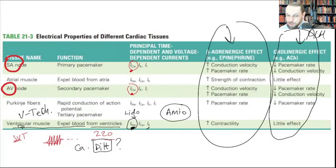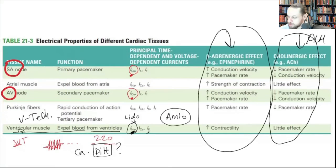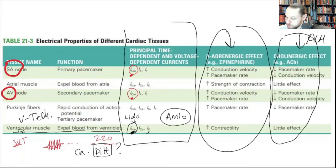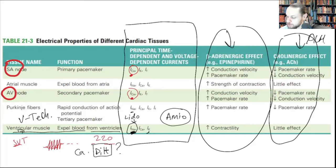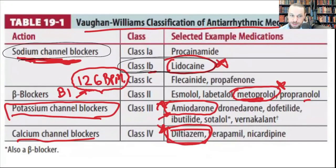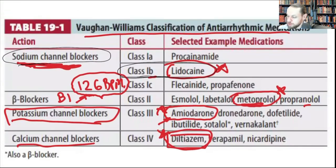The principal ion for the SA node and AV node is calcium; for Purkinje fibers and the ventricular system it's sodium. That's why for ventricular tachyarrhythmias you give sodium channel blockers, and for supraventricular tachyarrhythmias — A-fib, A-flutter, atrial tachycardia — you consider calcium channel blockers. That's where they're most effective.